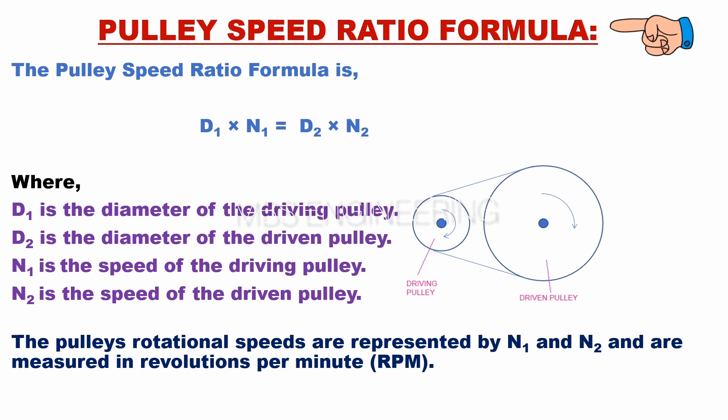First, let's learn about the pulley speed ratio formula. It is represented as D1 multiplied by N1 is equal to D2 multiplied by N2.